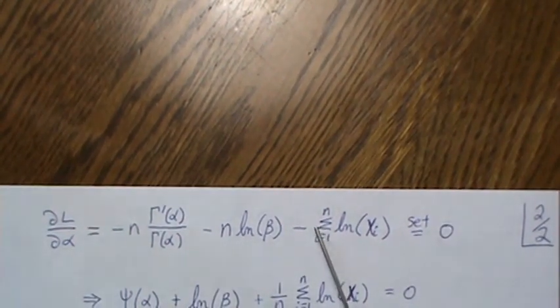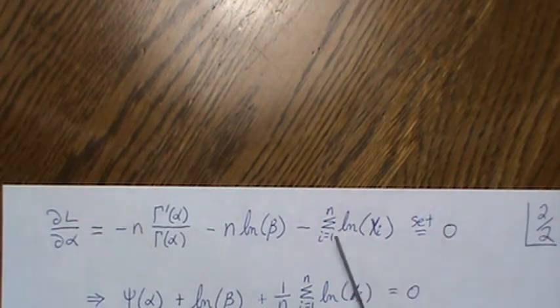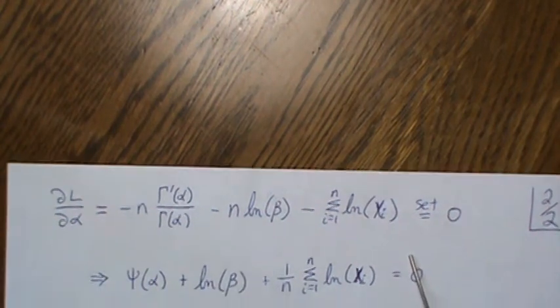Before it was the log of the product of the xi's, but the log of a product is the sum of the logs. So that's where we switch notation there. We set it equal to 0.